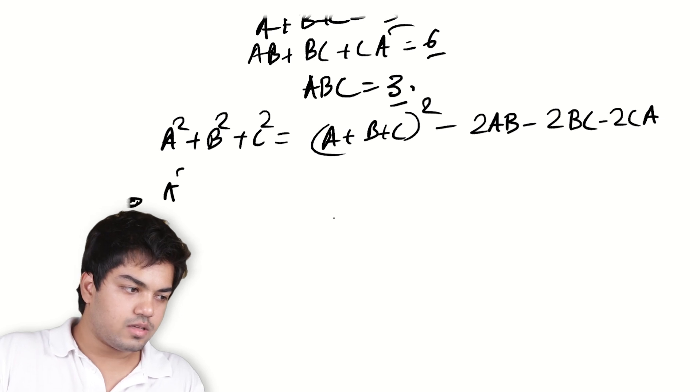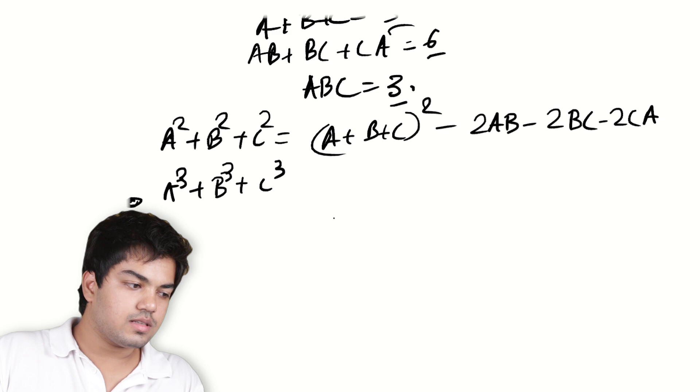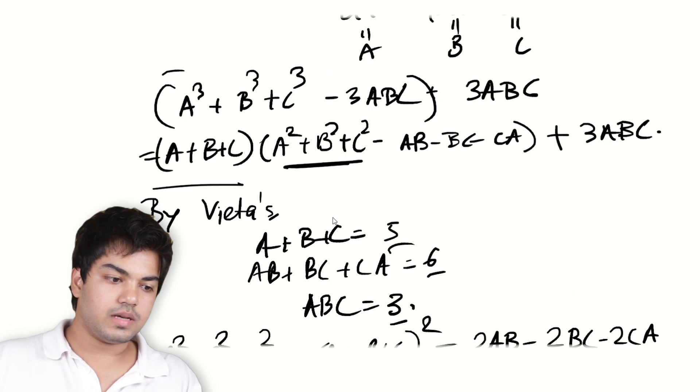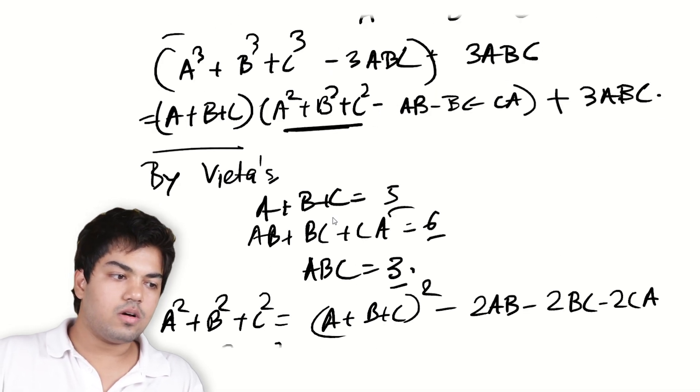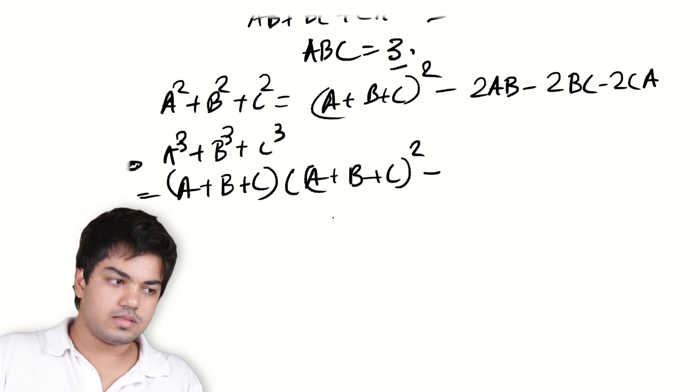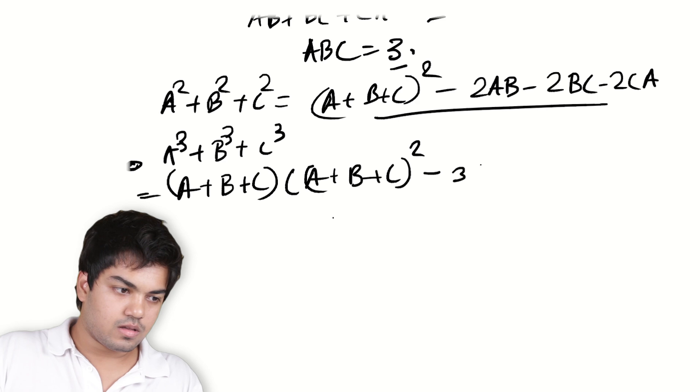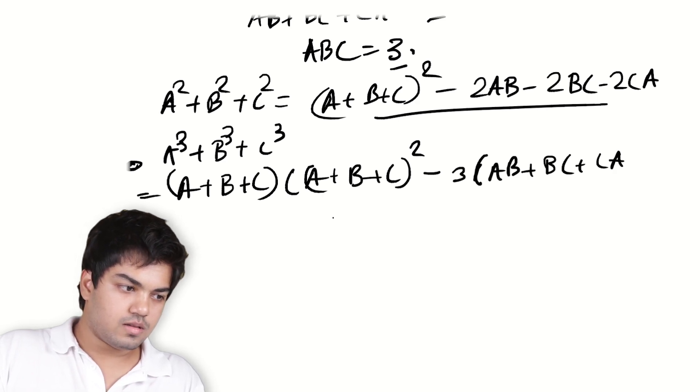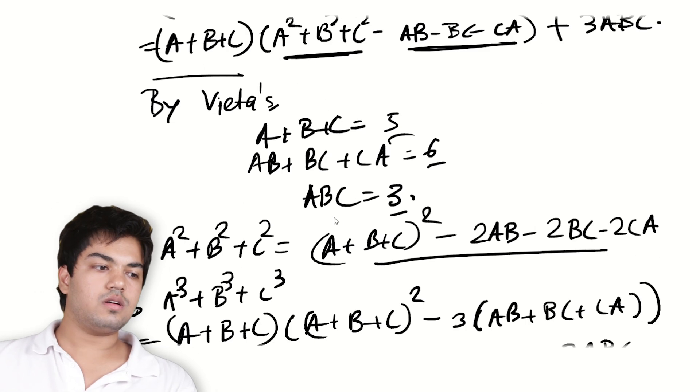So finally, the thing that I want to find A³ + B³ + C³ is actually equal to (A + B + C) times (A + B + C)² minus 3AB minus 3BC minus 3CA. Right? I already had a minus AB minus BC minus CA and then I replaced A² + B² + C² by this thing. So now, 3 times...